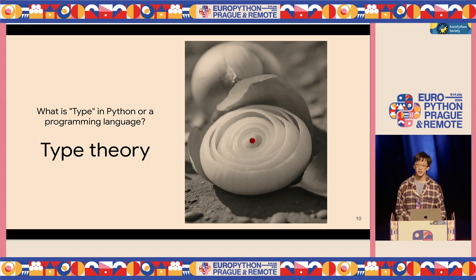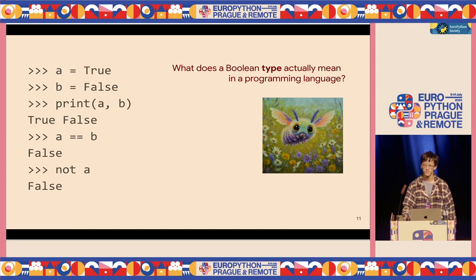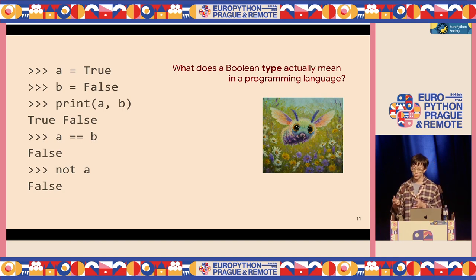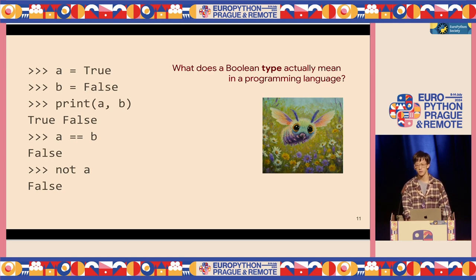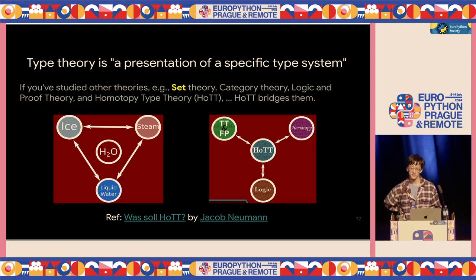Why do we need to talk about type theory? That's because we want to answer: what is type in Python, or in any programming language? We know that assigning true to a variable makes it a boolean type — but what does a boolean type actually mean for a programming language? Type theory is a representation of a specific type system. There's a thing called HoTT (Homotopy Type Theory) that bridges set theory, category theory, logic, and proof theory together.